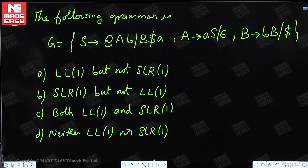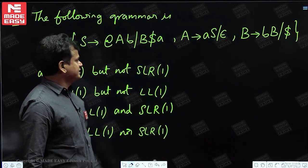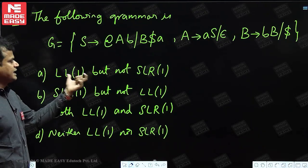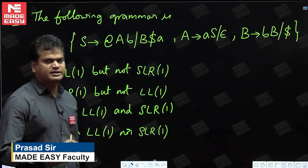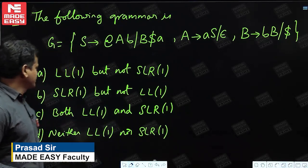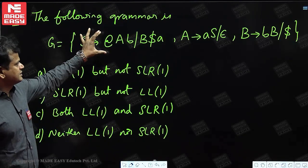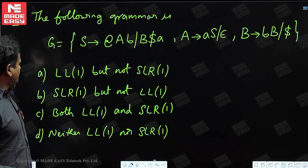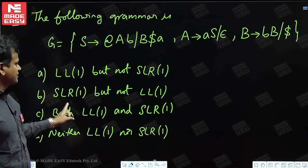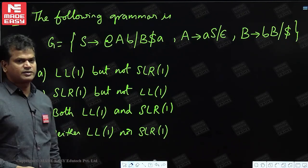The following grammar is given. This time I have given a different question based on both LL(1) and SLR(1). Previously we have done LR(0) and SLR(1). Now we are doing LL(1) and SLR(1). See the grammar. Option A: LL(1) but not SLR(1). Option B: SLR(1) but not LL(1). Option C: both. Option D: none of them.